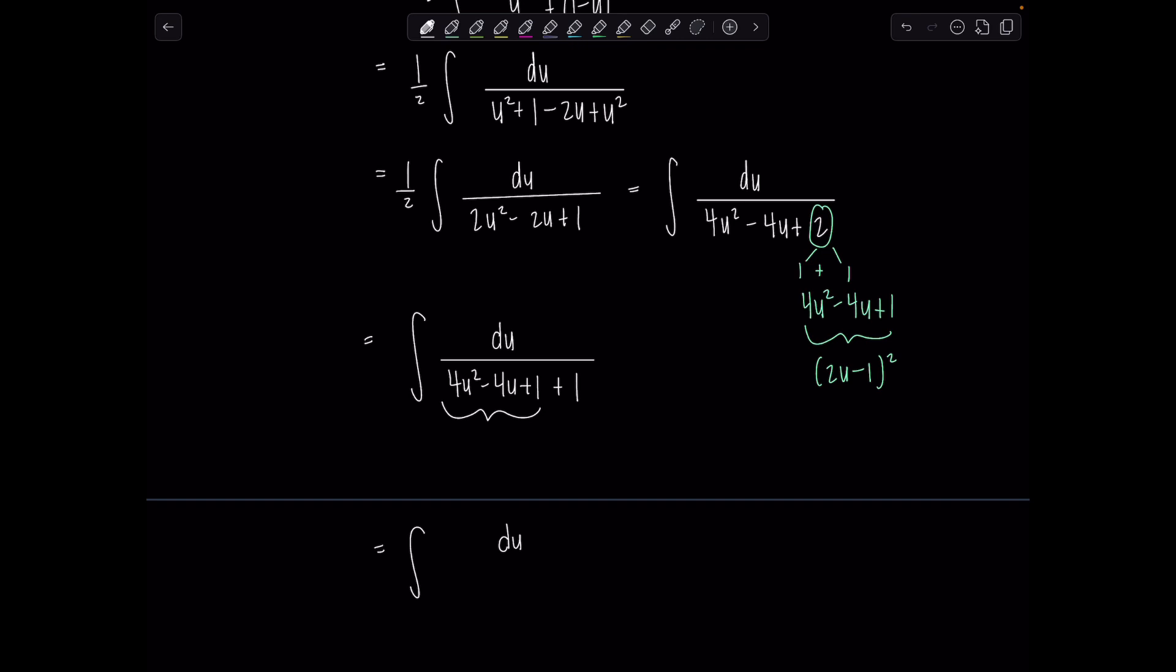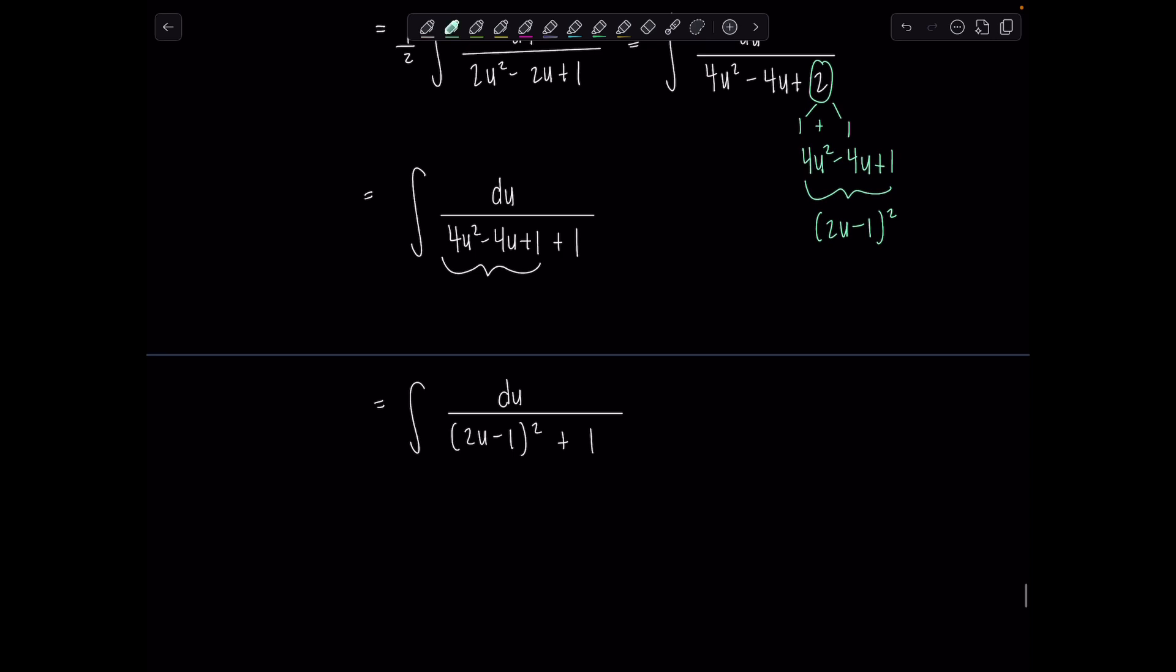If that one-half wasn't out there, it's fine. We would have completed the square using our normal methods. We just would have had some fractions in there, which is not always the most fun. From here, depending on where you're at in your integration career, you might be able to just finish off the problem. If you need to do another substitution, feel free. I'll go ahead and do it.